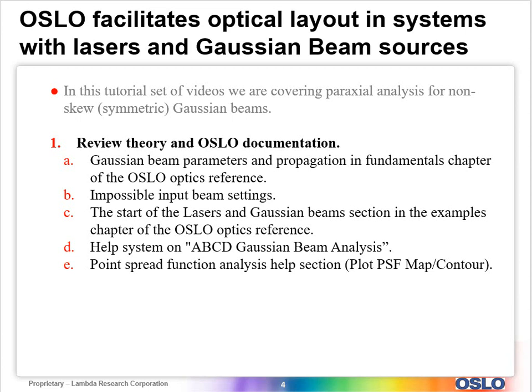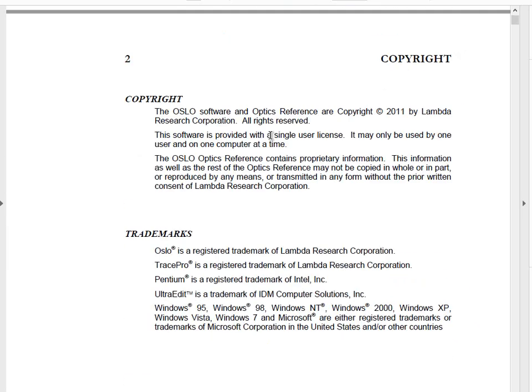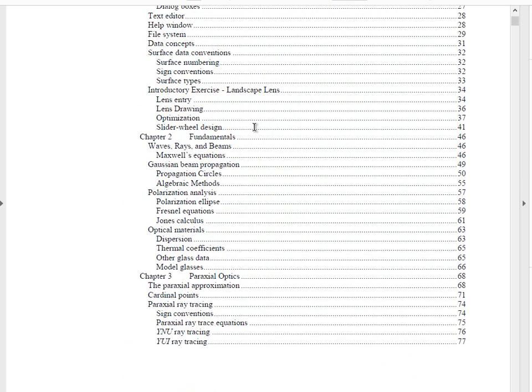One of the things that I will do is I will pause this video when I'm paging through documentation a little bit. So I open the optics reference and we'll just scroll down at the moment and I'll show the two parts where we're going to view things. So the first is going to be in the fundamentals chapter, this Gaussian beam propagation.